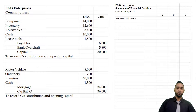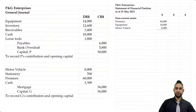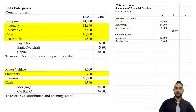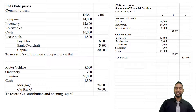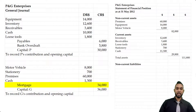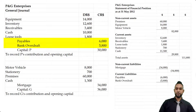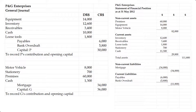For non-current assets, we start with premises of 68,000 brought in by G, then equipment and motor vehicle, giving a subtotal of 82,000. For current assets, we have inventory, receivables, loose tools, stationery, and cash — subtotal of 29,800. Adding that to non-current assets gives total assets of 111,800. In the net assets presentation, we do assets minus liabilities. Non-current liabilities include just the mortgage from G, and current liabilities include payables and bank overdraft from P — subtotal of 11,800. Added to the 34,000, that gives total liabilities of 45,800. Subtracting from total assets gives net assets of 66,000.